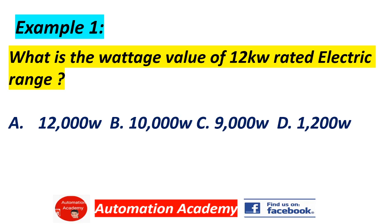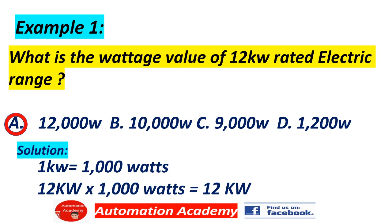Example: what is the wattage value of a 12 kilowatt rated electric range? A) 12,000 watts, B) 10,000 watts, C) 9,000 watts, D) 1,200 watts. Answer: A, 12,000 watts. Solution: 1 kilowatt equals 1,000 watts; therefore 12 kilowatts times 1,000 equals 12,000 watts.